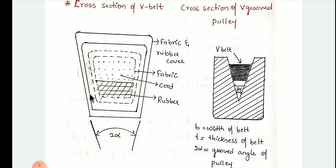These V-belt drives are usually endless and trapezoidal in cross-section, as you can see in the figure. In the V-belt drive, the rim of the pulley is grooved — a V-section is grooved so as to accommodate the V-belt. Because of this, we call it a V-belt drive. The shape of the belt is V, that's why it is called a V-belt drive.